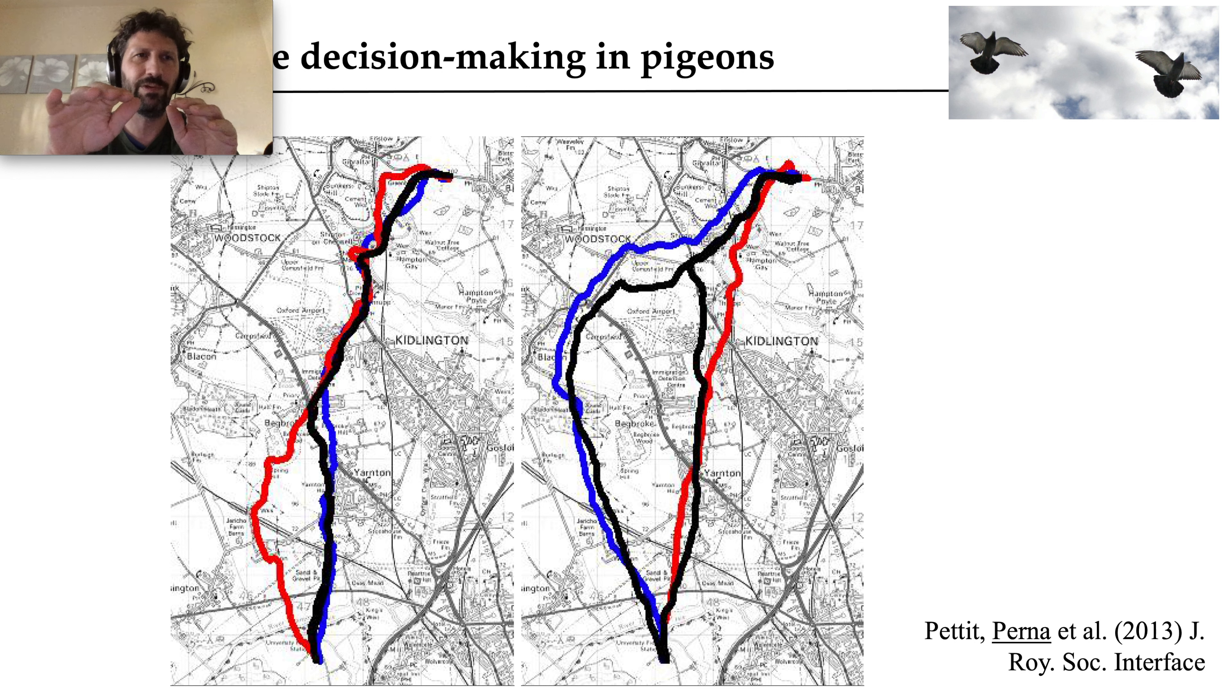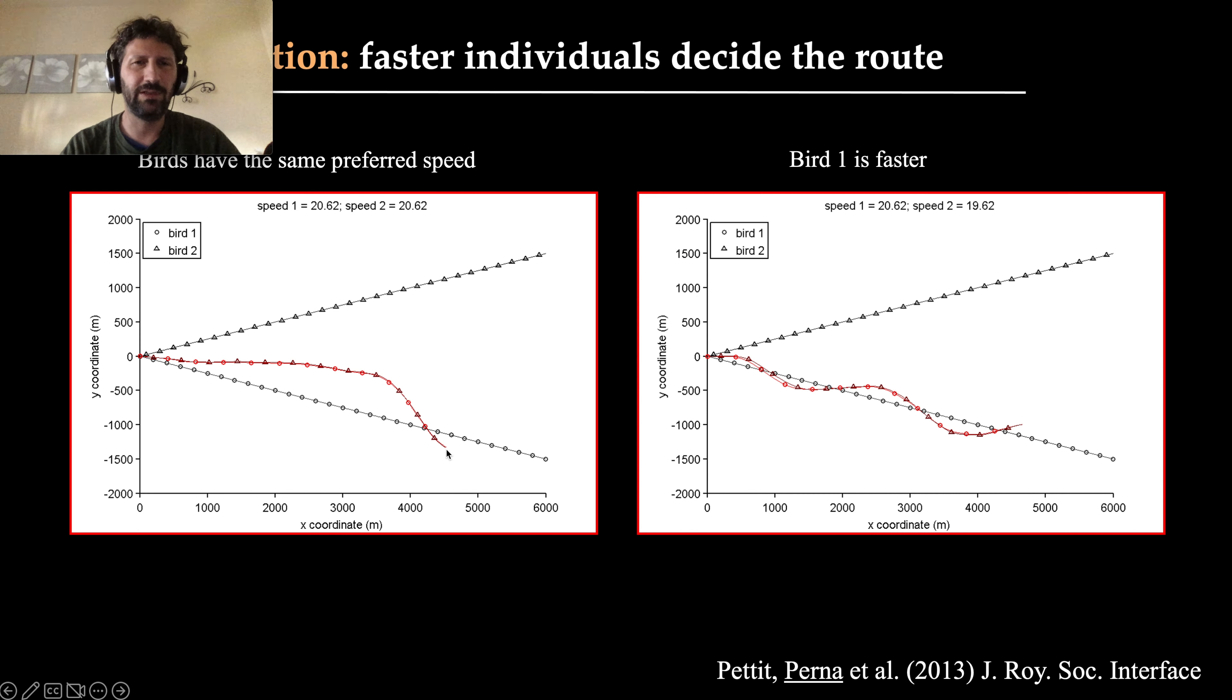But when you release them together, there is a conflict. Say the red one has developed this path, the blue one has developed this path, and together they fly along the black path—they need to take a compromise or alternative, or they need to split, but they don't like splitting. Our simulation models, inferred directly from the rules, predict that a pigeon that flies naturally a little bit faster—of course when they are together they fly at the same speed, but if there is one that has a slightly faster preferred speed, because of the asymmetry in the interaction rules, that individual will have a disproportionate influence on the decisions of the group and will lead the choice of the route. This is something that my colleagues, biologists, could test and verify that it was actually the case in the real data.